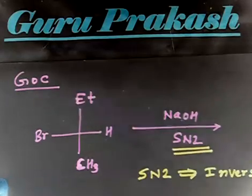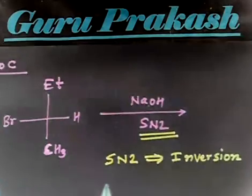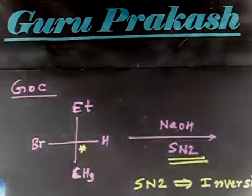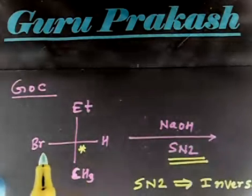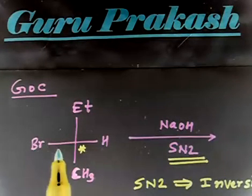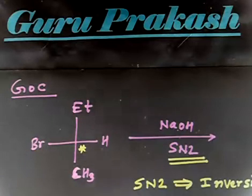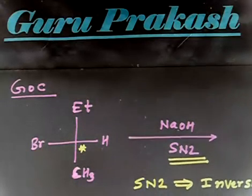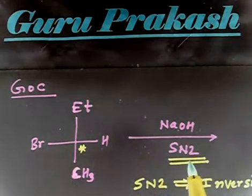Now, you see, so you have a chiral carbon. This carbon is chiral. What will happen, OH will attack and Br will leave. If I attach from the same side, this will be retention. But condition is given, that is SN2.